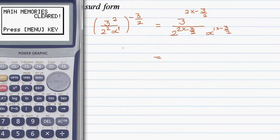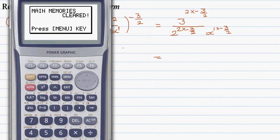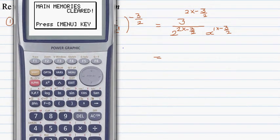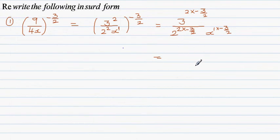2 times negative 3 halves - you should be able to do this without a calculator. This is 2 over 1 times negative 3 over 2, which is negative 6 over 2, giving us 3 to the power negative 3.